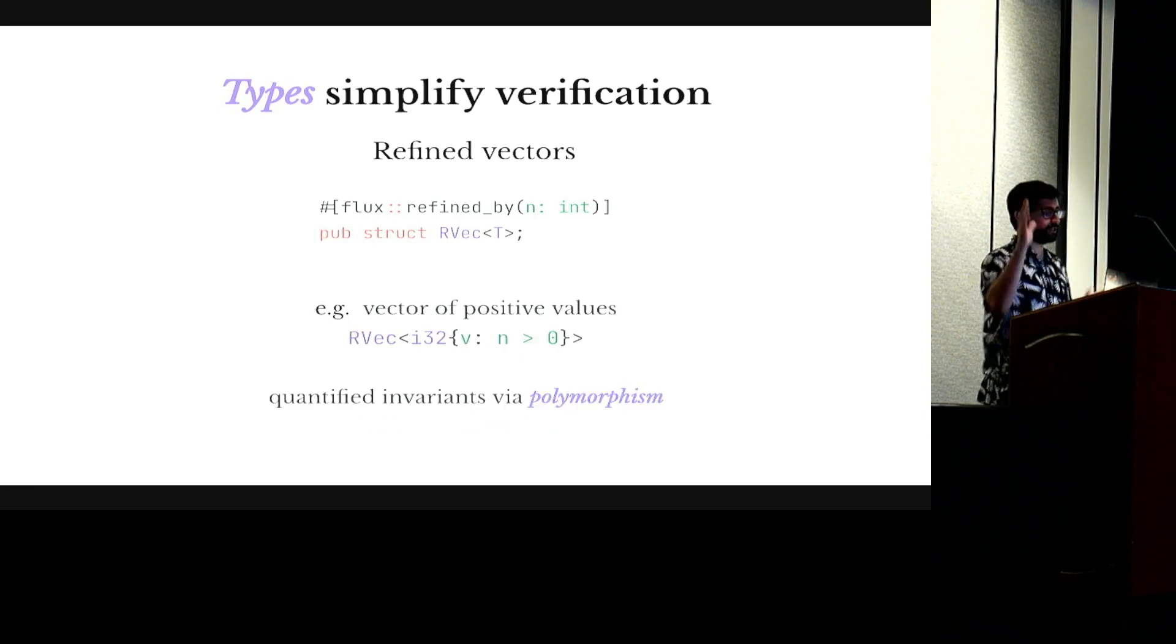Crucially the type of vectors is polymorphic, so we can instantiate it with any refinement types. Which means that even though our refinements don't have quantifiers, we can still express quantifying invariants over the collection. In this example we can say that a vector contains positive elements. All the elements of the vectors are positive.